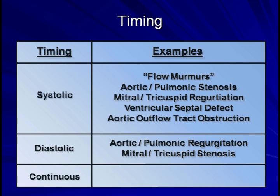Lastly, there are continuous murmurs, meaning that there are components of the murmur present in both systole and diastole. The only significant cause of this is a patent ductus arteriosus, which is a murmur exclusively limited to children. Occasionally, a patient may have a systolic and separate diastolic murmur audible in the same region, leading the examiner to perceive a continuous murmur. This most commonly occurs with a combined aortic stenosis and aortic regurgitation lesion.